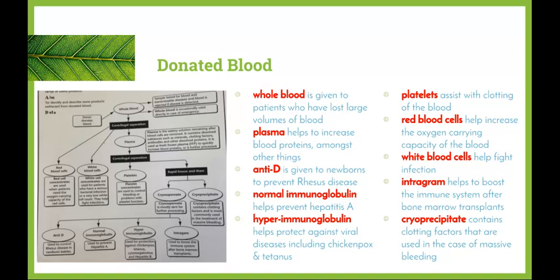Cryoprecipitate contains clotting factors used in the case of massive bleeding. Quite a few of these products are used when patients have lost a lot of blood to keep blood volume high. If blood volume drops, organs don't receive enough oxygen for cellular respiration to take place, and it can also affect the kidneys, so maintaining blood volume is essential.